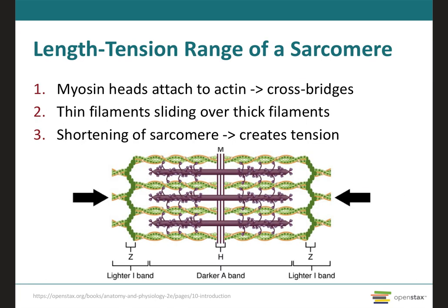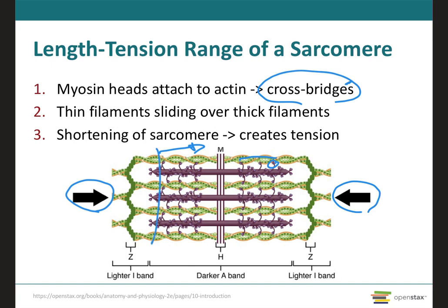When a skeletal muscle fiber contracts, the myosin head will attach to the actin to form cross bridges, followed by the thin filaments sliding over the thick filaments as the myosin head pulls the actin. This results in sarcomere shortening, as shown by these arrows and by the thinning of the I-band that we already covered.